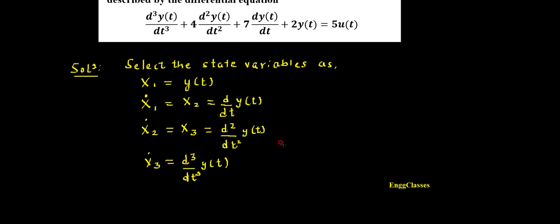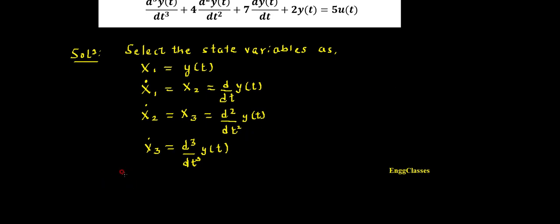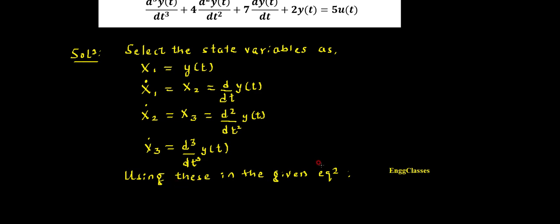Using these in the given differential equation: first I have d³y(t)/dt³, which is nothing but X3-dot. Therefore, X3-dot plus four times d²y(t)/dt², which is known as X3, so I can write four times X3.